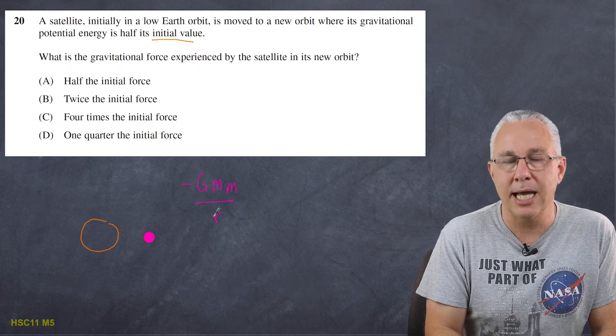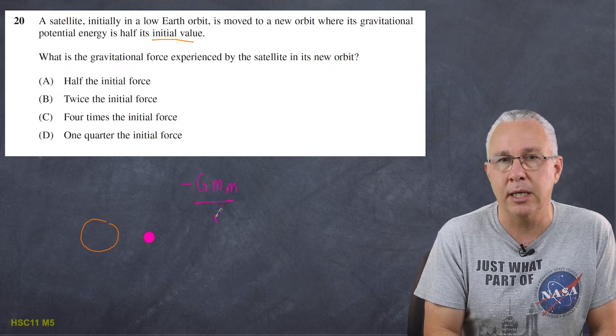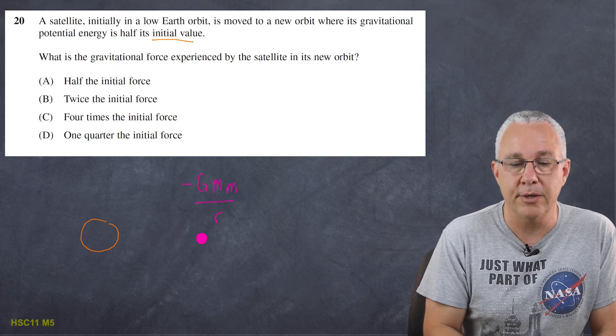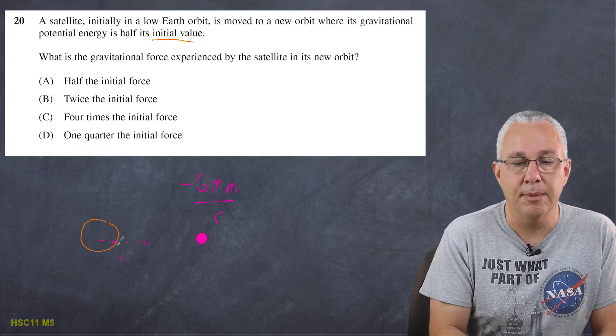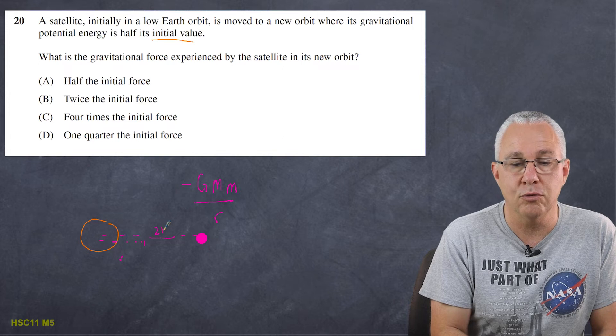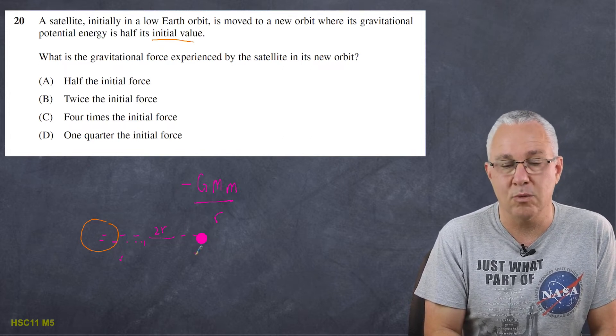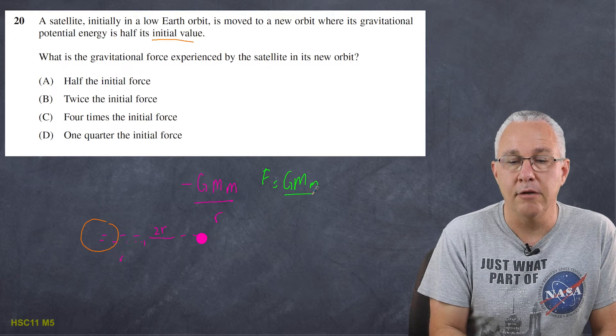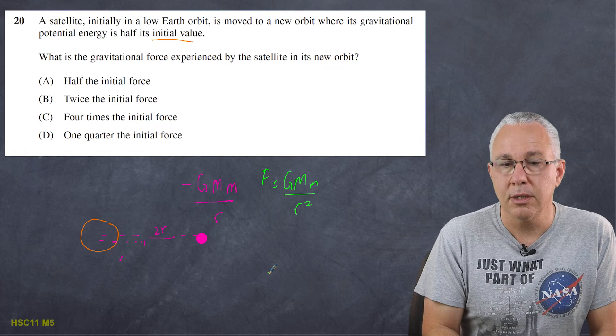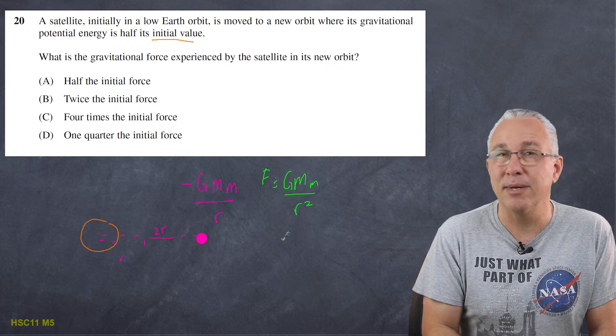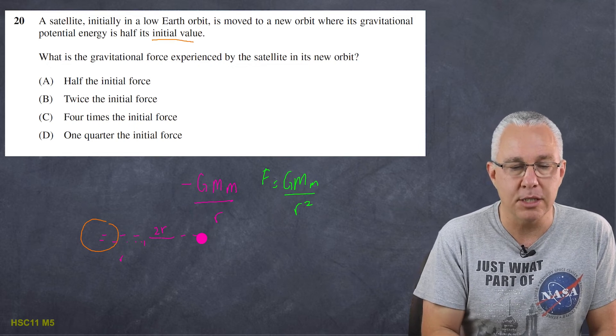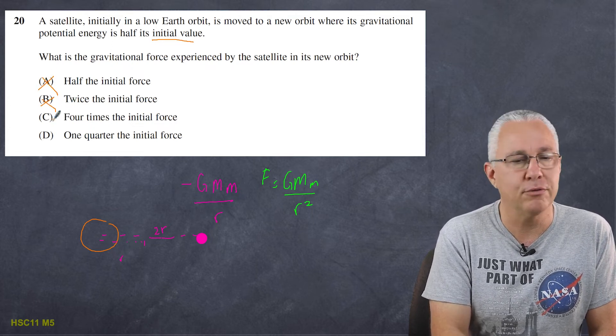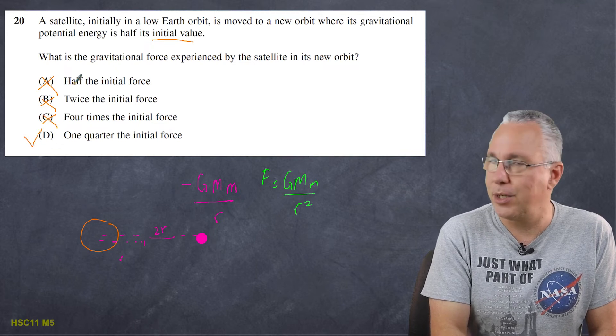Now remember that in dealing with the value here not the sign and so that means my radius will double. It'll move to this point. So initially of course we had a value of r but now we're moving it to a value of 2r. Now I've doubled the displacement or doubled the distance. What about the gravitational force? Well it becomes a quarter. So now let's look at our responses. We see that it's half the initial force that is incorrect. Twice the initial force that is incorrect. Four times the initial force not correct either. One quarter? Well there's the correct answer.